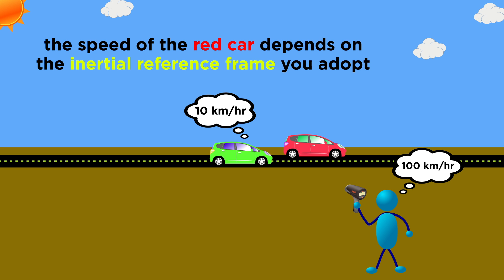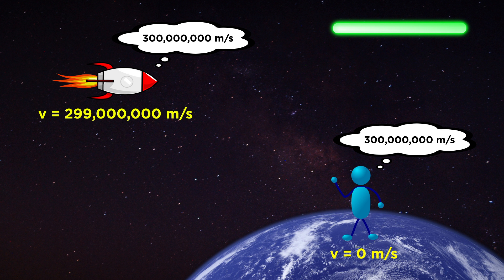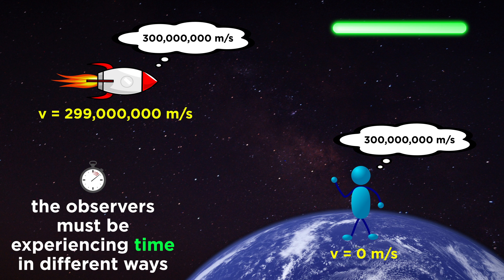The problem arises when we now have to try to account for these different reference frames. With the earlier example, the person on the ground and the person in the slower car measure different speeds for the faster car, and this agrees with our everyday experience. But in order for the person on the ground and the person in the spaceship moving near the speed of light to measure the same speed for light, they must be experiencing time in different ways.